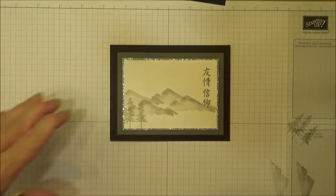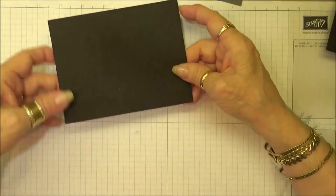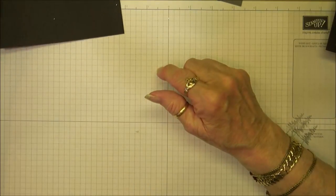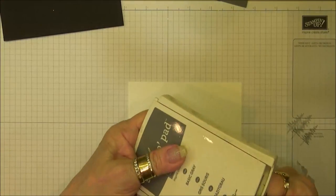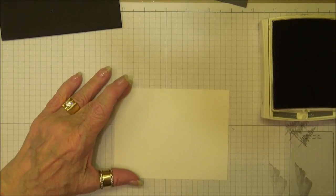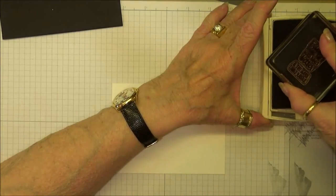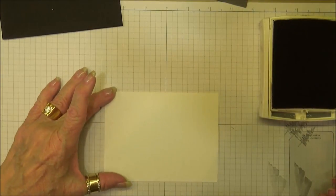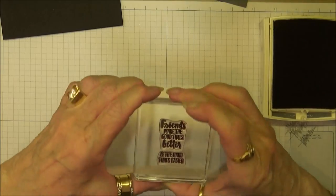Let's get started. We're going to take a piece of basic black cardstock for our card base, and then I'm going to take a piece of whisper white cardstock and use the basic gray ink.